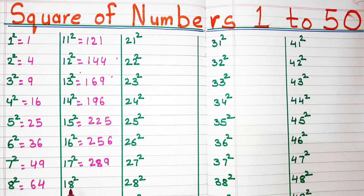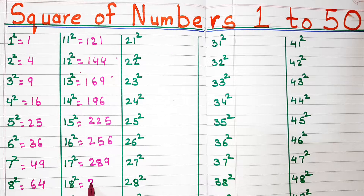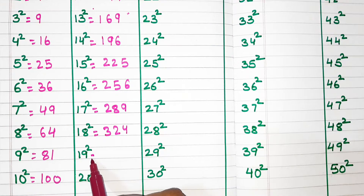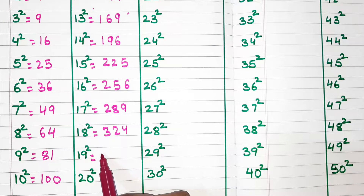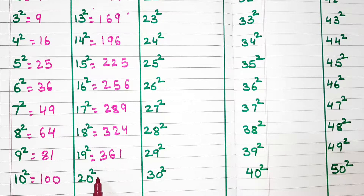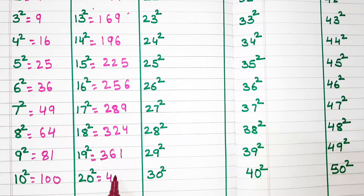Square of 18, 324. Square of 19, 361. Square of 20, 400.